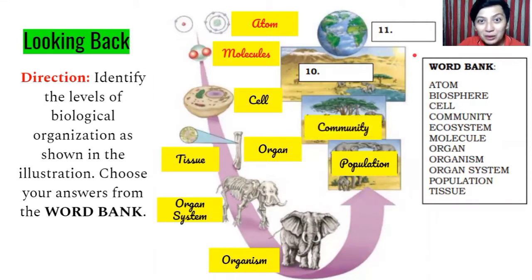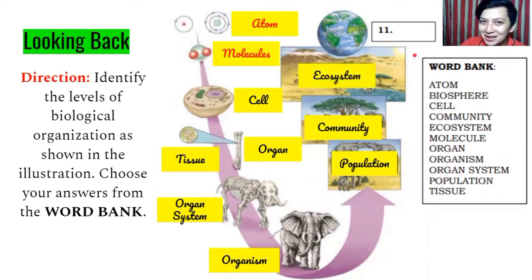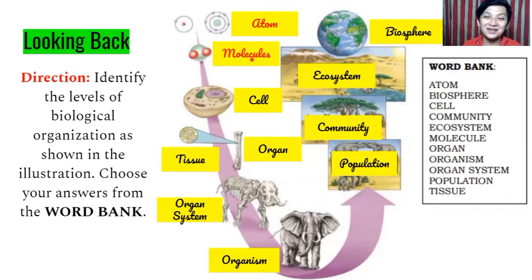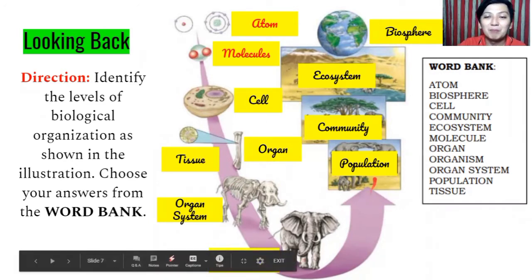Where community is grouped together, it can form an ecosystem or biomes. And different ecosystems grouped together form the biosphere. So these are all the levels of biological organization: atom, molecules — which can be living or non-living — then the biological levels starting from cell, tissue, organ, organ system, organism, population, community, ecosystem, and biosphere.